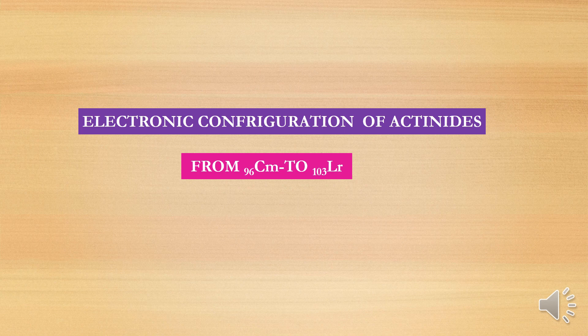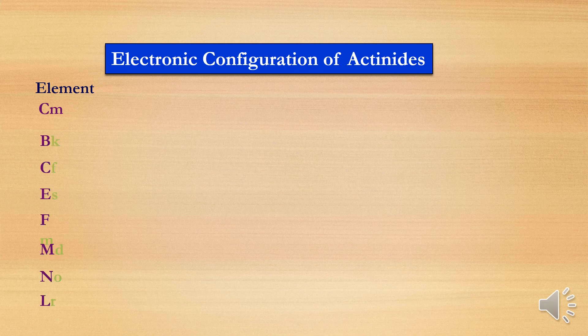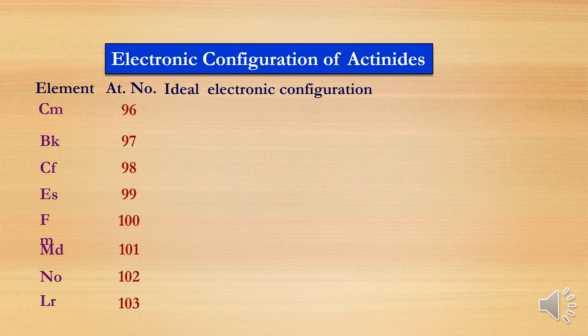In the last video we already learnt the electronic configuration of actinides from actinium to curium. Today we will move to the next elements, atomic number 96 to 103, from curium to lawrencium. The first topic is the ideal electronic configuration, which is written according to the increasing order of energy level following the Aufbau principle.